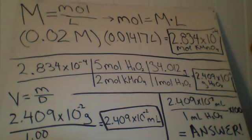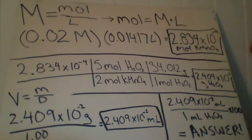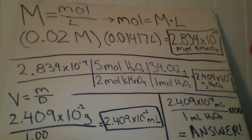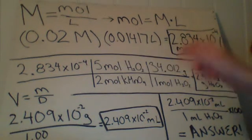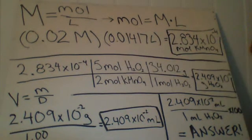To do that, we manipulate the molarity equation, which is usually moles over liters. Moles equals molarity times liters, since those are the two that we know. So we multiply molarity times the liters, and we get 2.834 × 10^-4 moles of potassium permanganate.